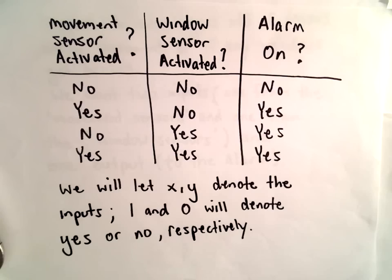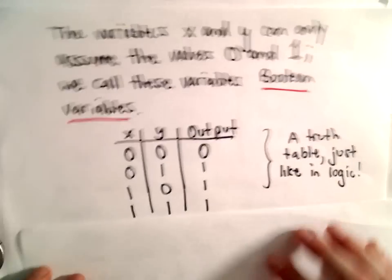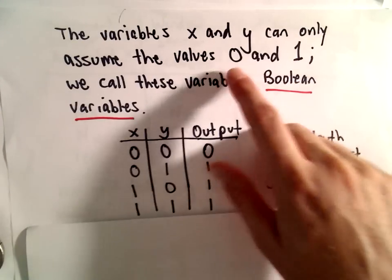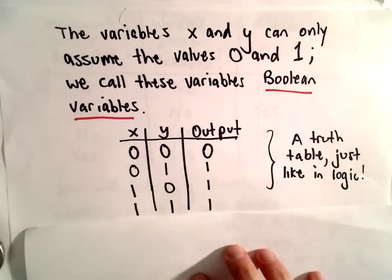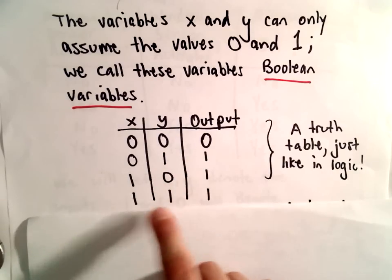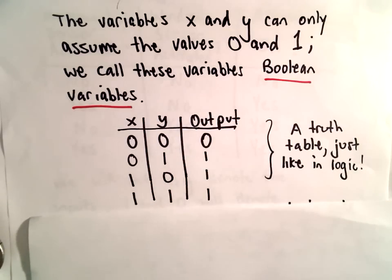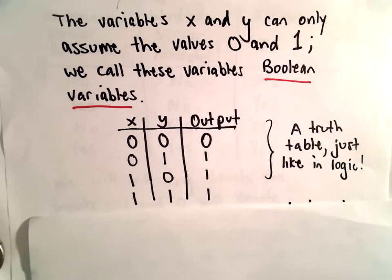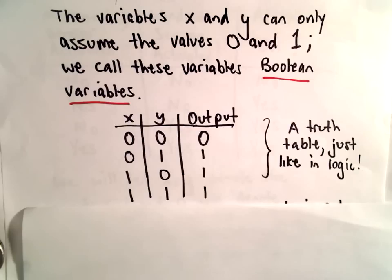Our variables x and y are what are called Boolean variables — variables that can only take the values zero or one. So the table becomes: 0,0 → 0; 0,1 → 1; 1,0 → 1; 1,1 → 1. If you've seen truth tables in logic, this is exactly a truth table — instead of true and false we have zeros and ones, but it's the exact same thing. A lot of circuitry is based simply on logic and sets.